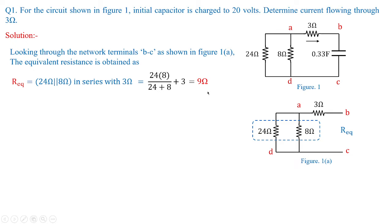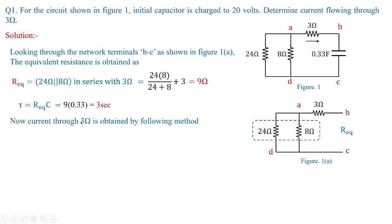Once we have R equivalent, we can calculate the time constant tau, which equals R times C. R equivalent is 9 ohms and the capacitor value is 0.33 farads, so tau equals 3 seconds. Once that is done, it is easy to find V(t) for t greater than 0 — meaning how the charged capacitor voltage decays — using the given initial voltage and time constant.